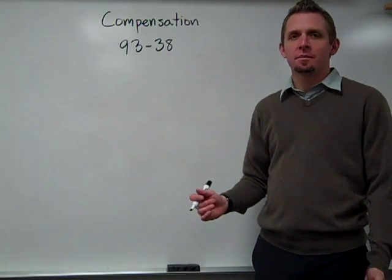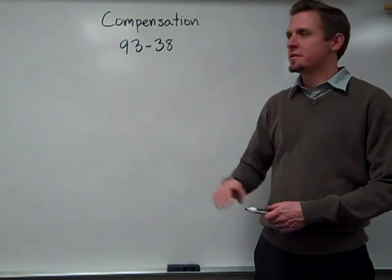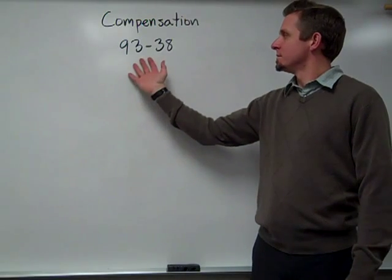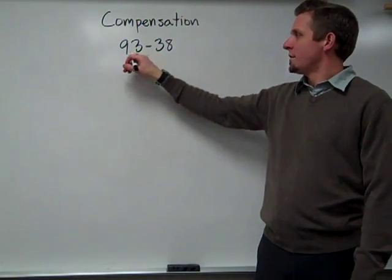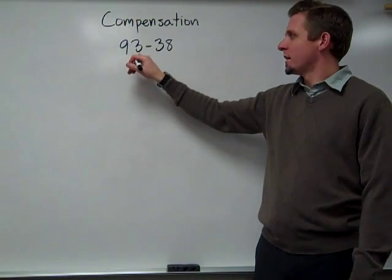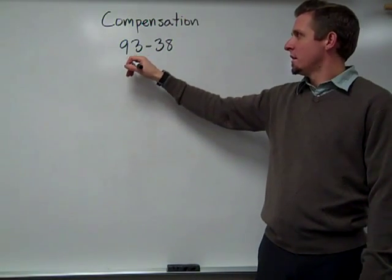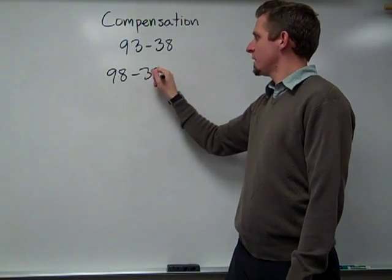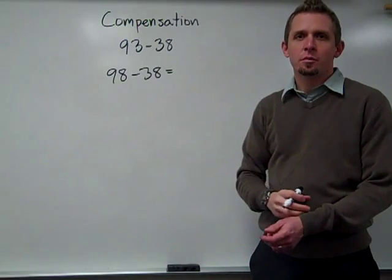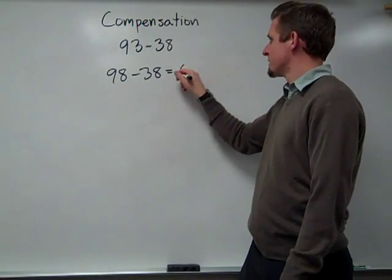The next strategy I'm going to show you is called compensation. So with this, I want to get the numbers to look a little bit more like each other. So I have a 3 here and an 8 here. I could add 5 to 93 and make it 98. So I could do 98 minus 38. That's a little bit easier problem. That's a total of 60.